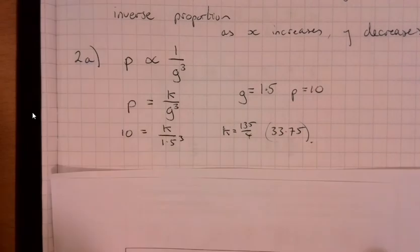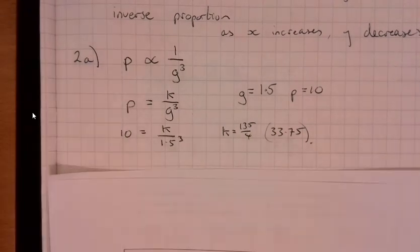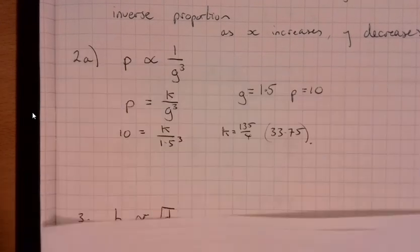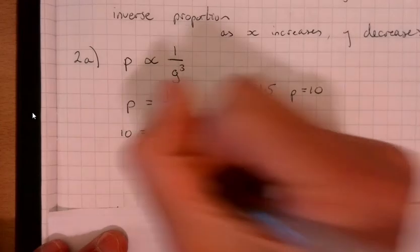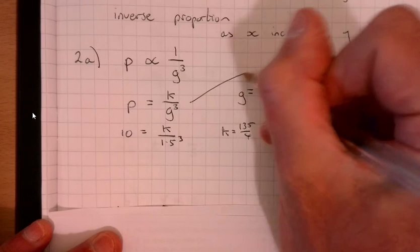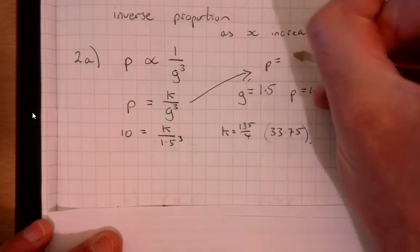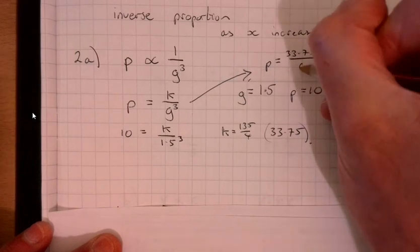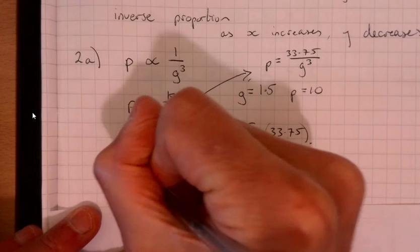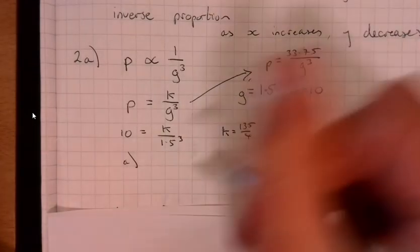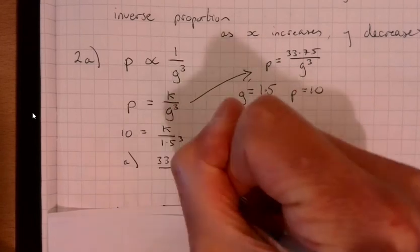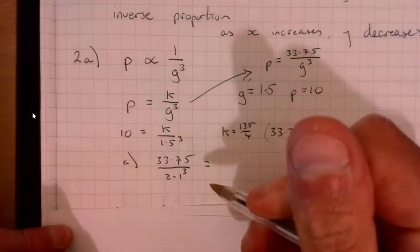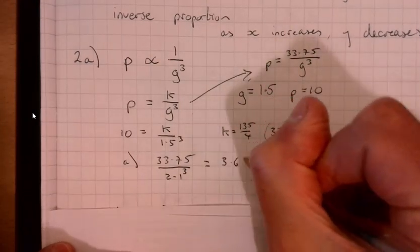And then the next part, we look at the question. It said find P when g is equal to 2.1. So if we know that g is 2.1, let's do this. p equals 33.75 over g cubed. So part a when g is 2.1, that would be 33.75 over 2.1 cubed. And if you just plug that into your calculator, I think you end up with 3.644.